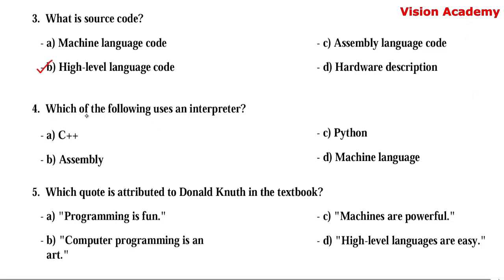Question number 4. Which of the following uses an interpreter? Option A: C++. Option B: assembly. Option C: Python. Option D: machine language. Here, option C — Python uses an interpreter — hence option C, Python, is the right answer.